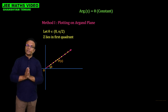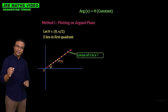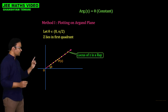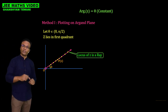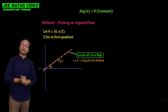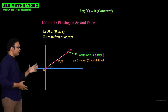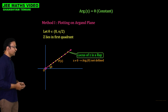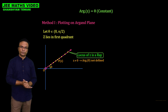What we get from this is that the locus of z is a ray whose starting point is the origin. However, we cannot include the origin because the argument of 0 is not defined. So the locus of z is a ray excluding the origin. Here we have considered theta belonging to 0 to pi by 2.